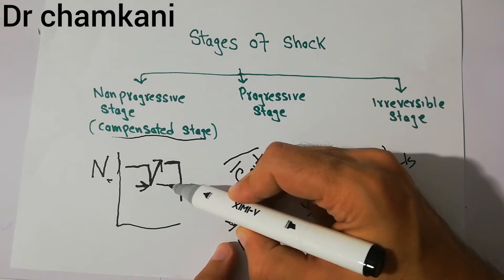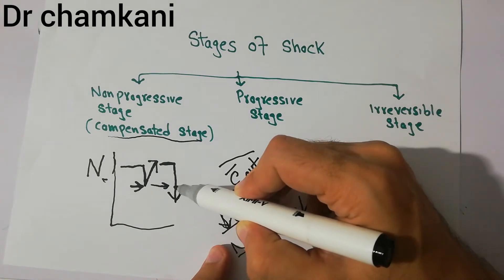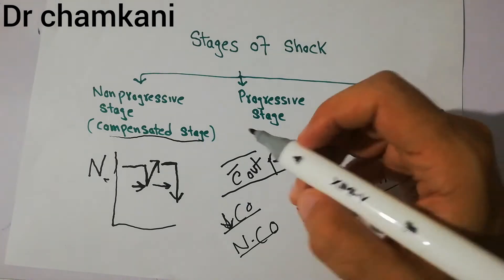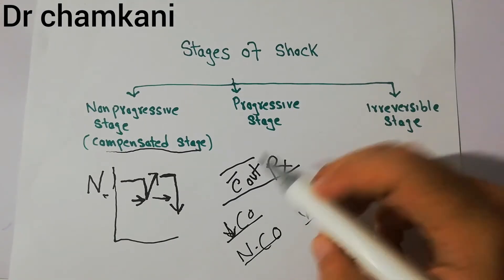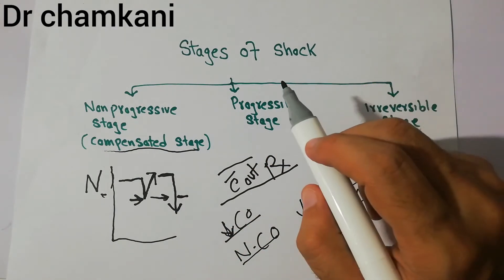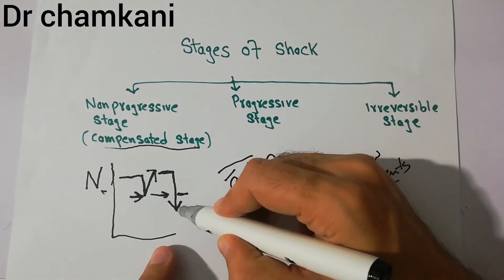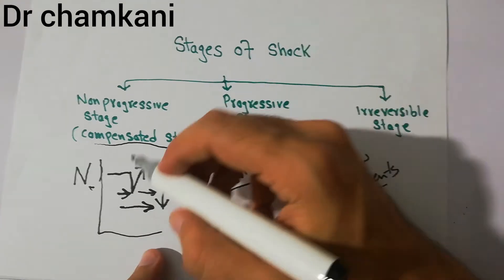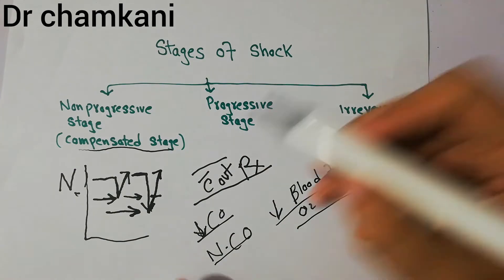Beyond that stage, if the shock increases further and blood flow decreases even more, the decrease in oxygen supply and nutrients to body tissues cannot be compensated or corrected without external help or treatment. The second stage — the progressive stage — is where the decrease in blood flow cannot be recovered by the human body's own mechanisms alone, but external treatment can help recover it back toward the normal level.